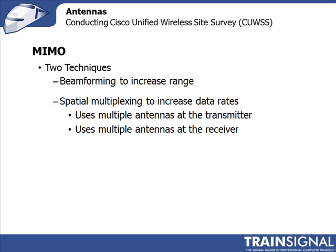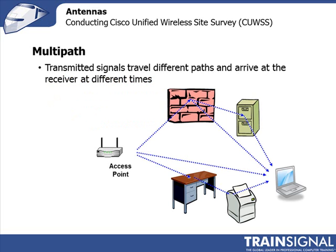Spatial multiplexing is the technique in 802.11n that gets you up to really high data rates, and it's a very important one to understand. The way these antennas work is they transmit on the same frequency at the same time on multiple antennas, and they receive that energy on multiple antennas. When you transmit on the same frequency at the same time on different antennas, those signals combine over the air and arrive together at the receiving antennas.